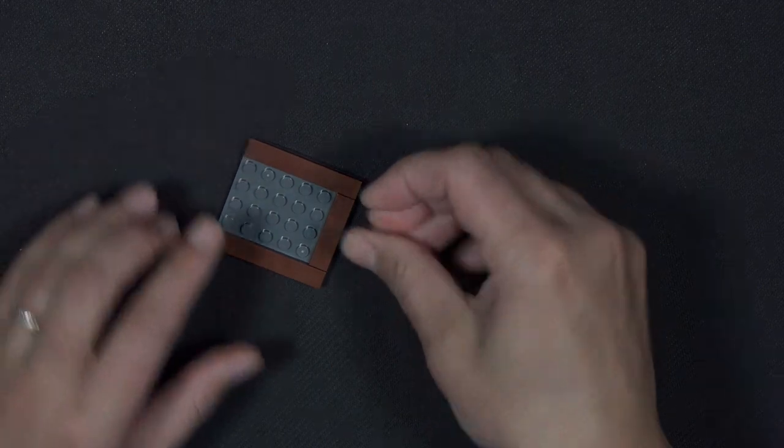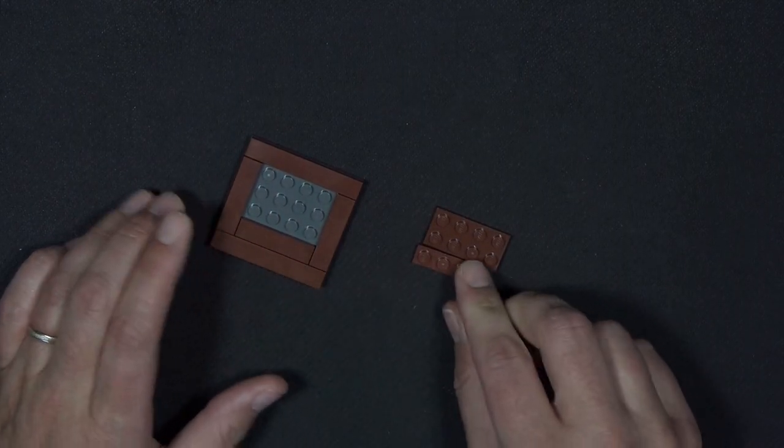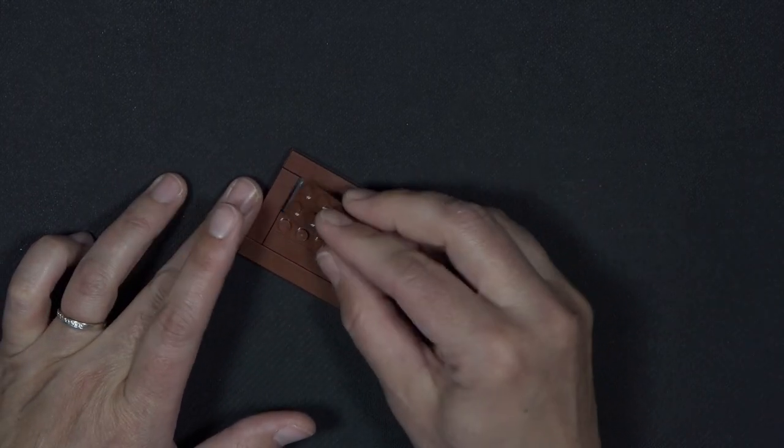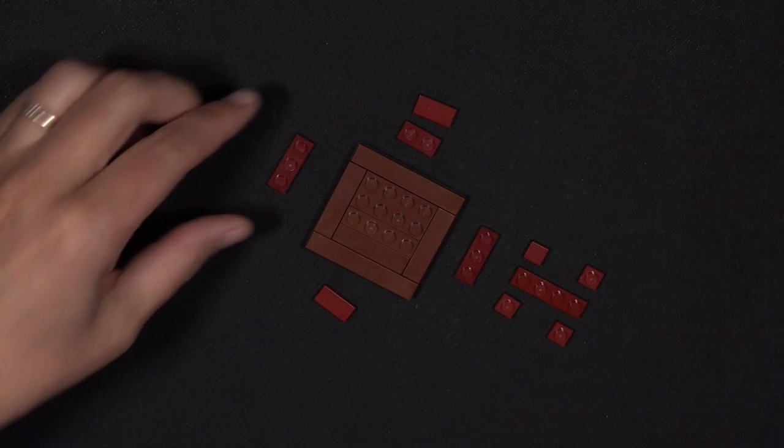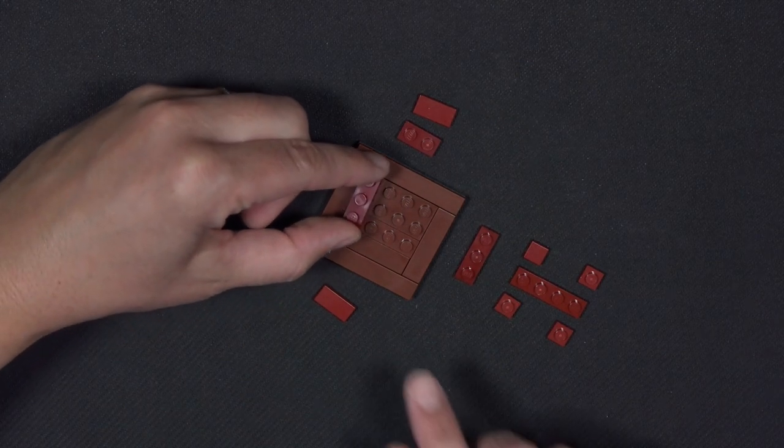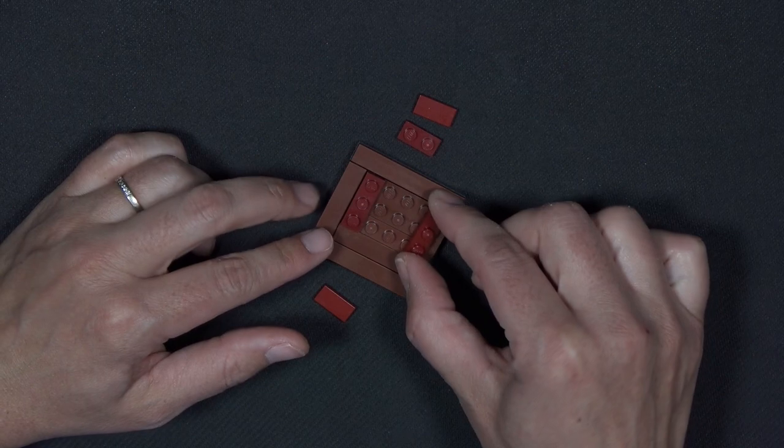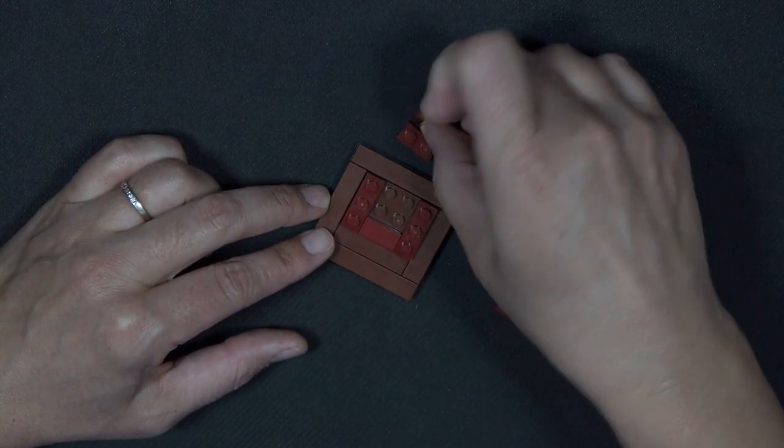1x4 tiles on each of these ends, and down here. Then I have a 1x4 plate and a 2x4 plate. For the next row we have a 1x3 plate in dark red that sits on those three studs, and another one on this side. And then we have a 1x2 plate on each end.